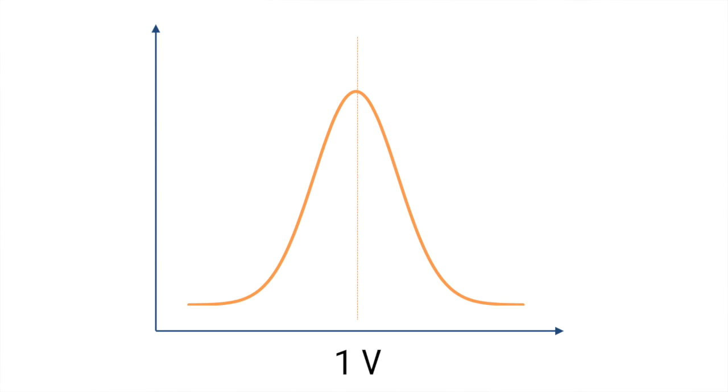A property of every single transistor is something called a threshold voltage. Suppose that the threshold voltage for a transistor inside your smartphone is designed to be 1 volt. Each transistor will have a threshold very close to 1 volt, but it will actually follow a bell curve, with some values on either side. So this transistor here might be 1.02 volts, and this one over here might be 0.99 volts. If we're trying to develop some type of password from this device, we could utilize this physical property.